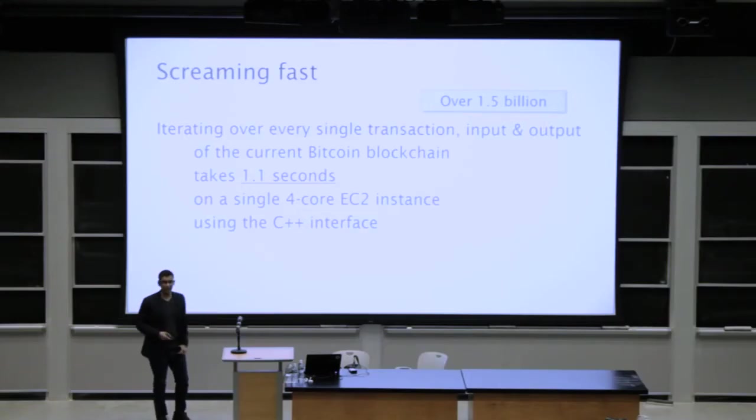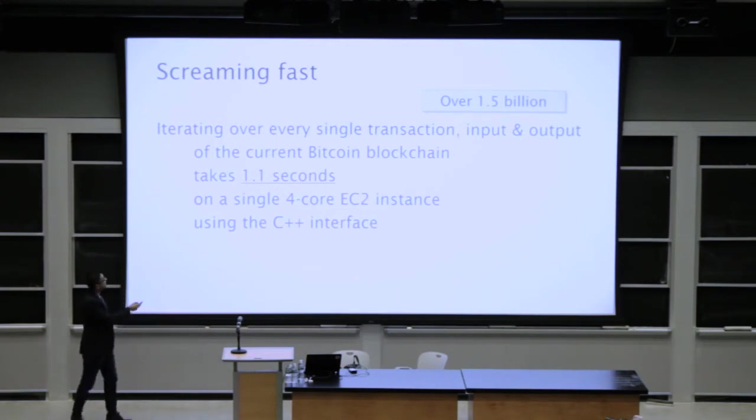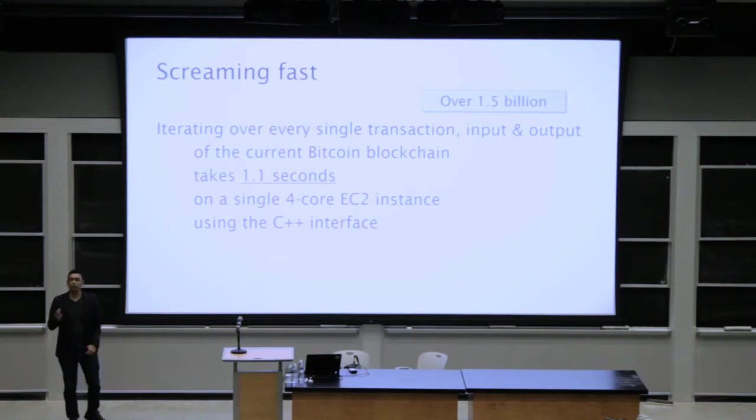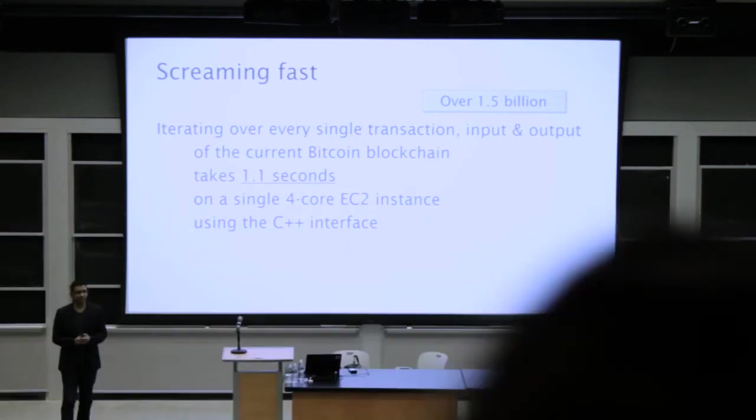Here's what we've been able to accomplish with BlockSci in terms of performance. For the current Bitcoin blockchain, iterating over every single transaction header, transaction input, and transaction output — of which there are 1.5 billion — on a single four-core EC2 instance takes only one second. This turns out to be several hundred to several thousand times faster than previous tools. When you can get this kind of performance, you can drop a whole lot of complexity from data analysis. Somehow we've forgotten that computers are fast if we know how to take advantage of that speed.